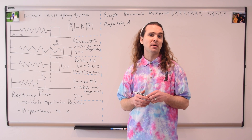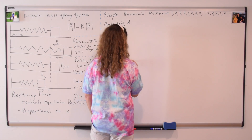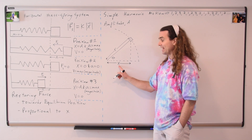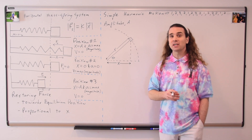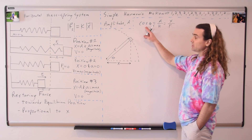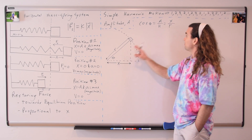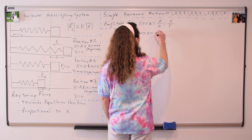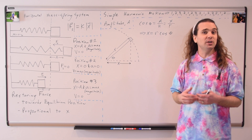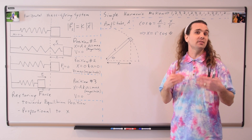We can also look at simple harmonic motion in terms of circular motion. An object moving in a circle can look like this. We can solve for the x-position of the object moving in a circle using the cosine of theta. By definition, the cosine of theta equals the adjacent divided by the hypotenuse, and therefore it's equal to the x-position divided by the radius. We get that the x-position is equal to the radius times the cosine of the angle.